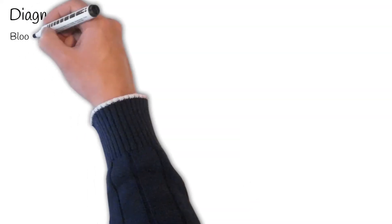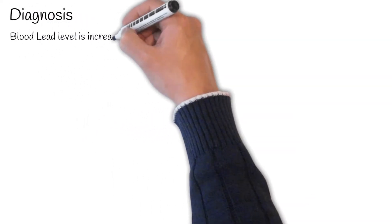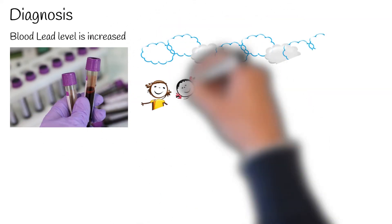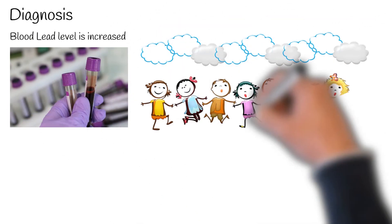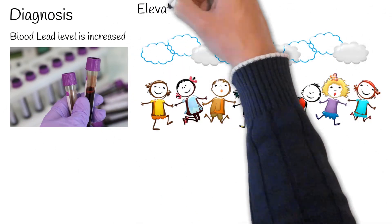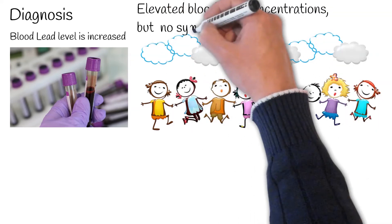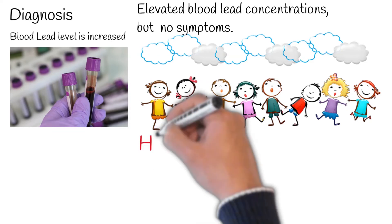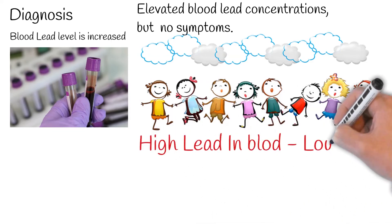Diagnosis. Blood lead level is increased, plus symptoms and patient history. Hundreds of thousands of children have elevated blood lead concentrations, but the vast majority of them are asymptomatic, meaning they have no symptoms.